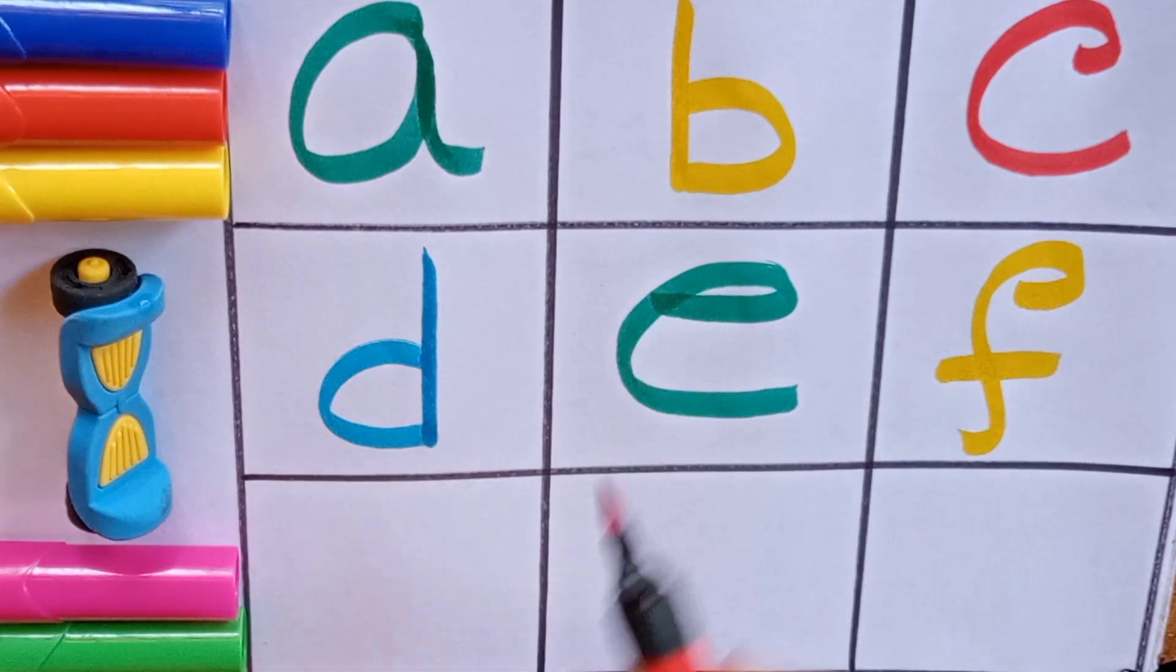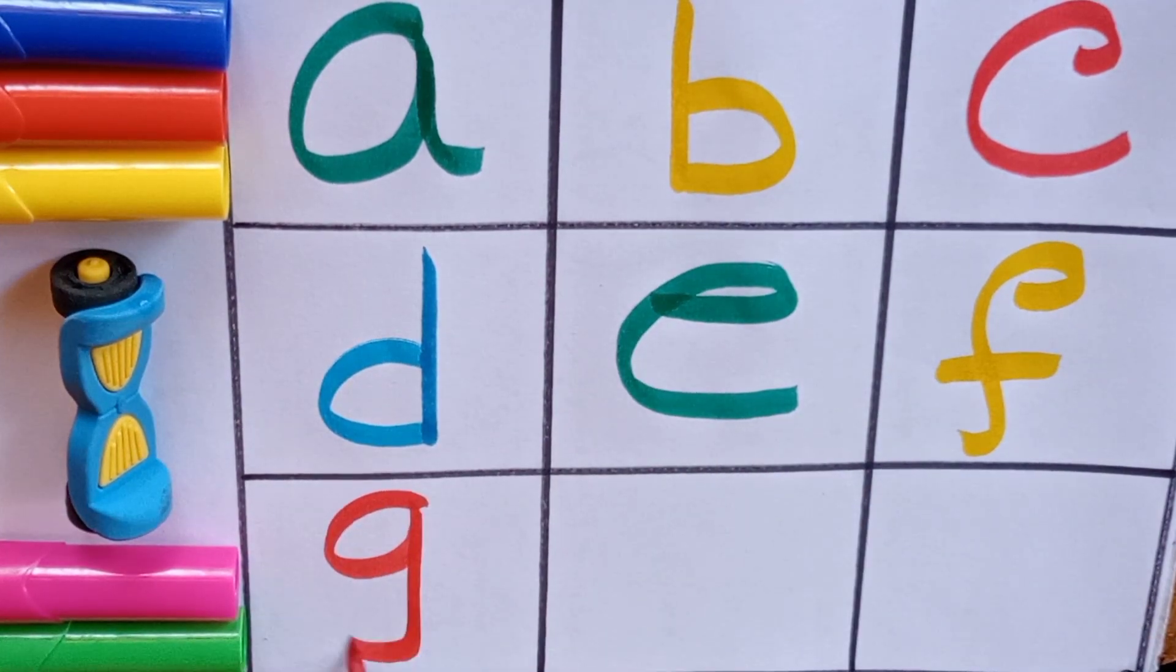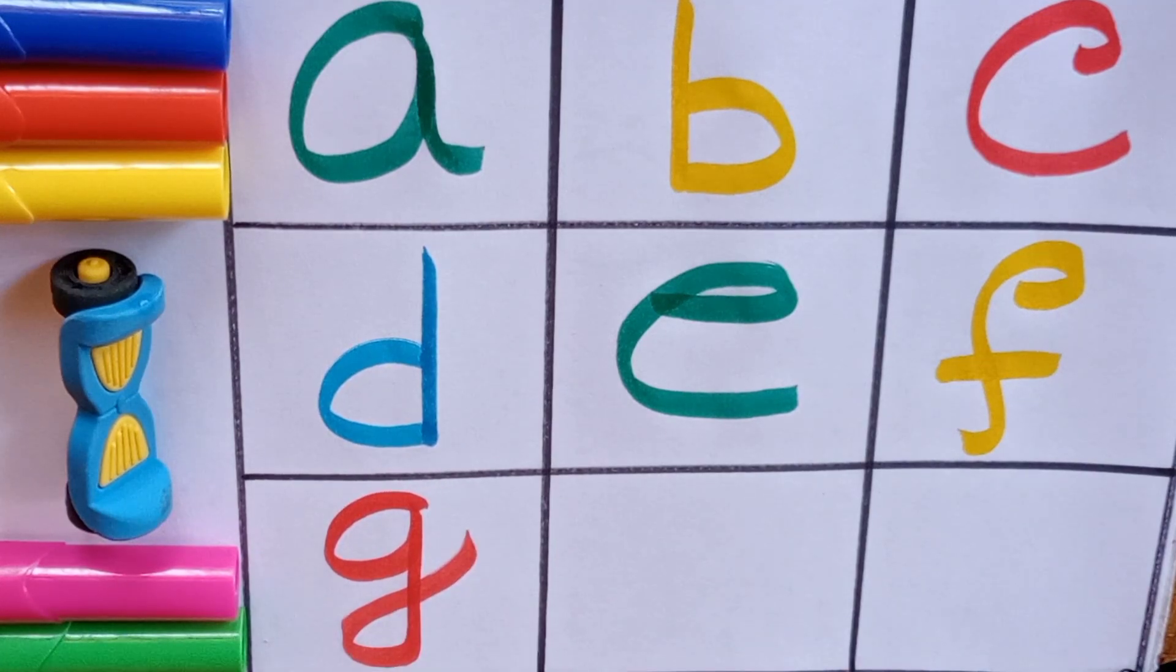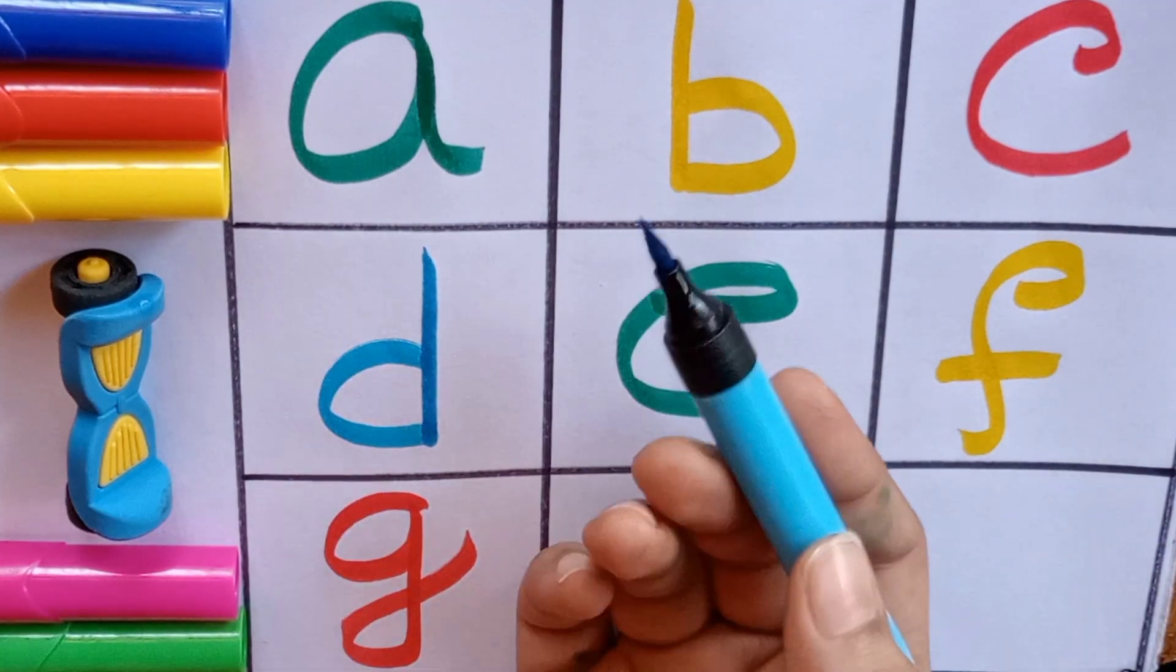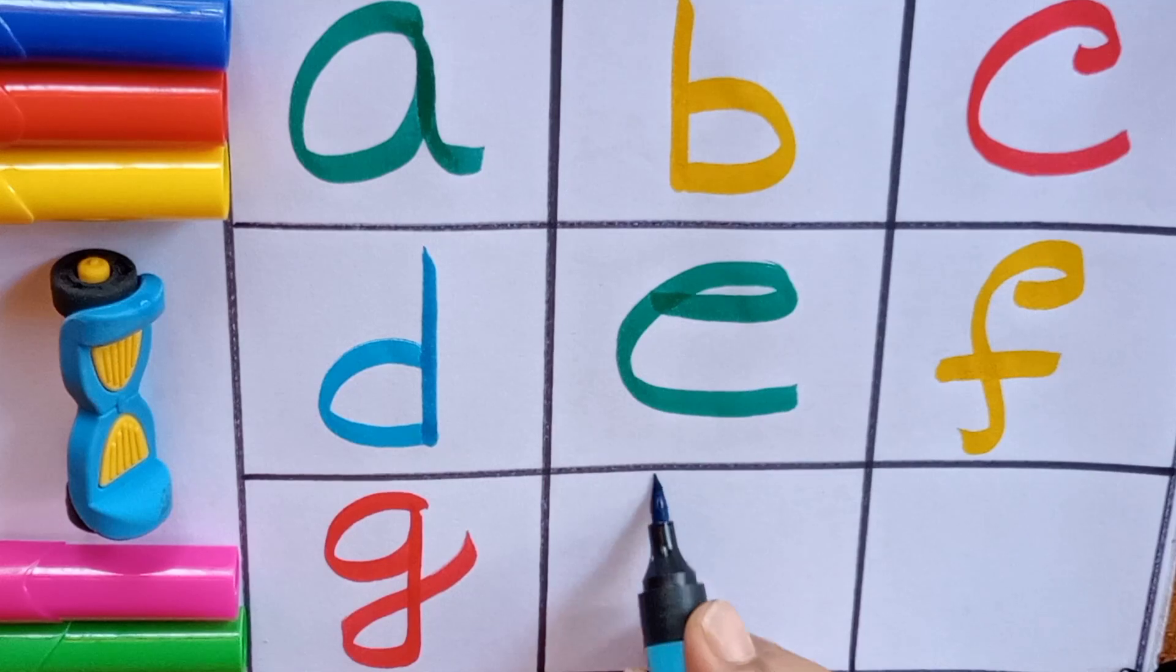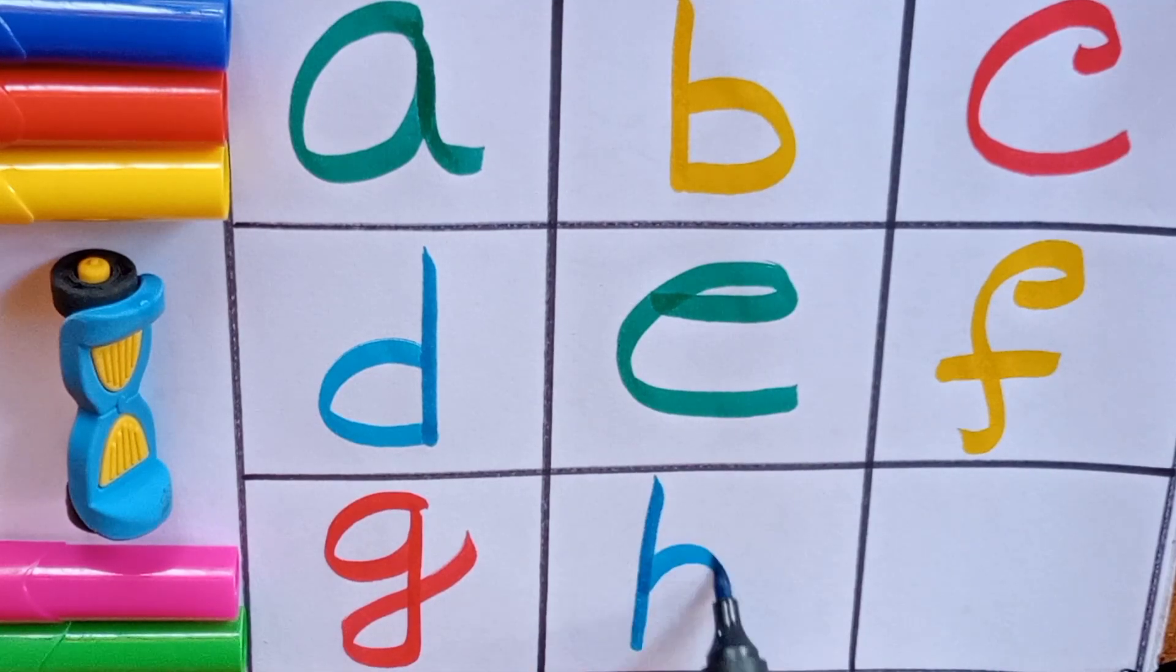Red. G, G for game, G for also grapes. Sky blue. H, H for hen, H for horse.